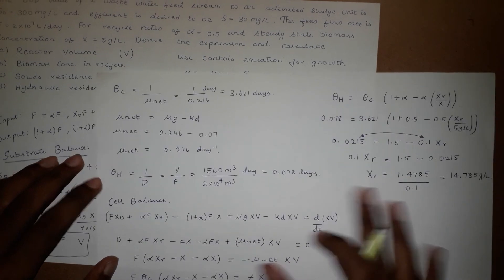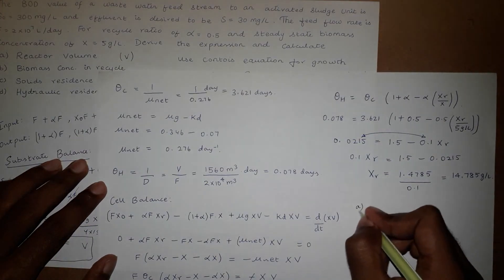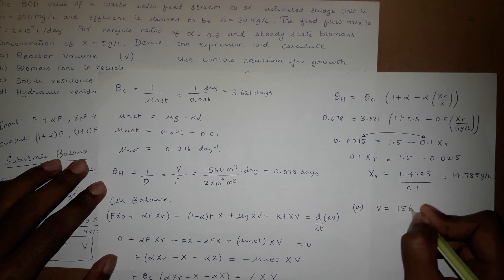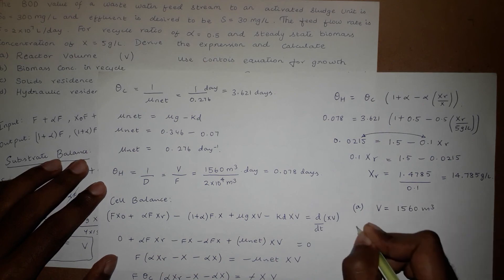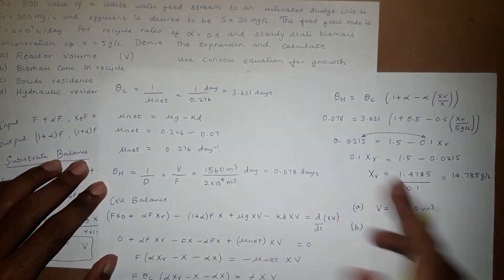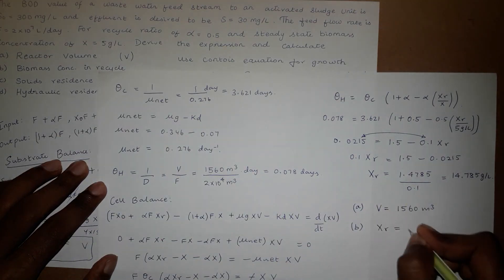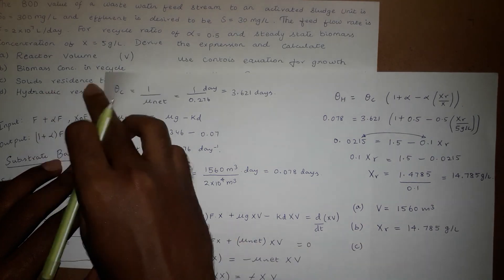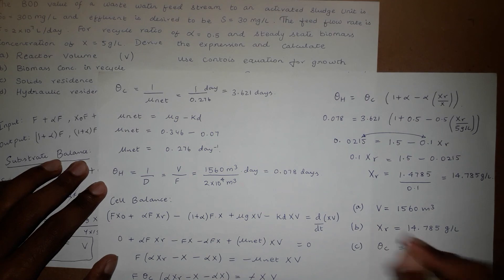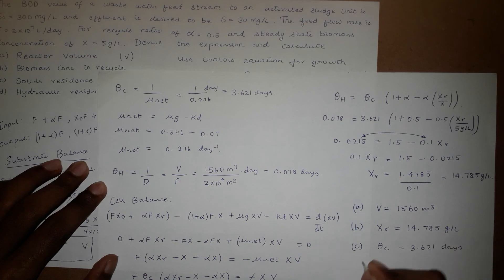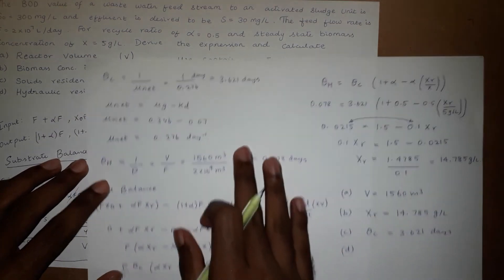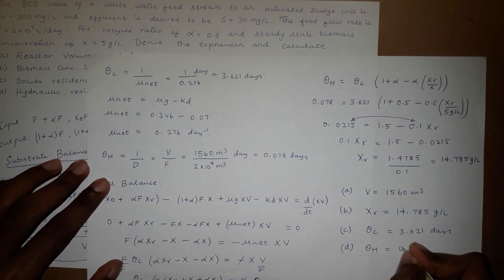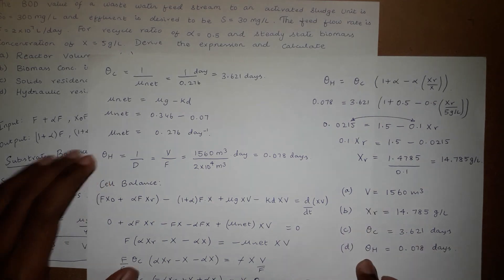To summarize, we have calculated all four values: (a) reactor volume V = 1560 m³; (b) biomass concentration in recycle XR = 14.785 g/L; (c) solids residence time θC = 3.621 days; (d) hydraulic residence time θH = 0.078 days.